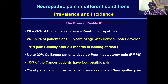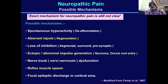Looking at the prevalence and incidence of neuropathic pain — the ground reality is that it has many times been ignored. As you can see, 20 to 24% of diabetic people experience painful neuropathy, while patients with herpes zoster develop post-herpetic neuralgia 25 to 50% of the time. Patients who have had breast cancer surgery experience post-mastectomy pain (PMPS) in more than 20% of cases, and one third of cancer patients suffer from neuropathic pain.